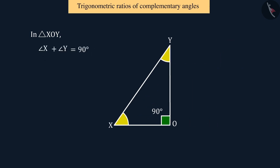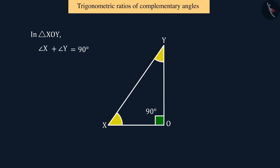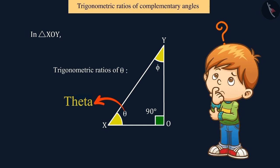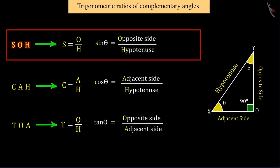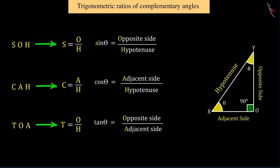Assuming the measure of angle X in the triangle XOY is theta, so the measure of angle Y would be 90 degrees minus theta, which we represent here by phi. So, let's find the trigonometric ratio of theta. You can also revise SOHCAHTOA to find the value of trigonometric ratios.